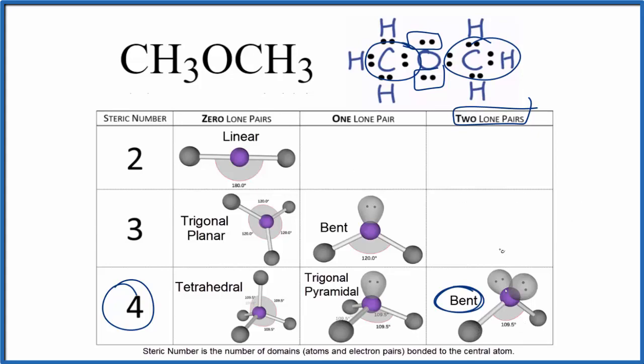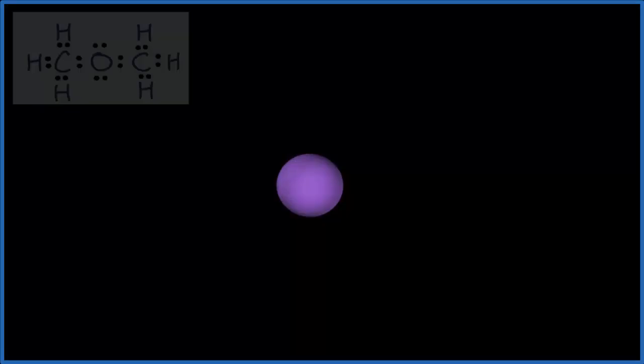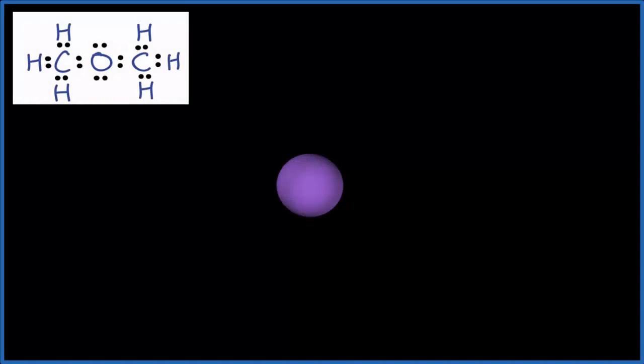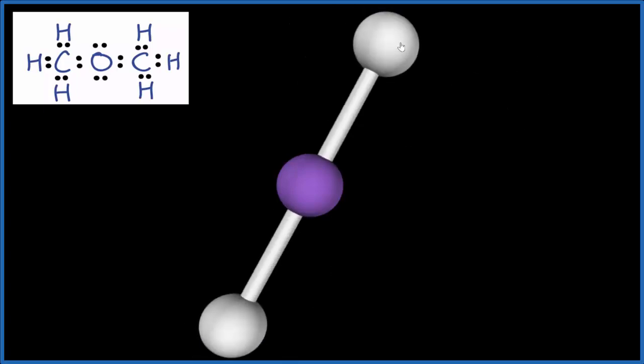Let's see if we can visualize what that looks like. We'll consider the purple to be the central atom, the oxygen, and then we're going to add the two methyl groups. So we add one, two methyl groups. You see they spread out.